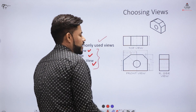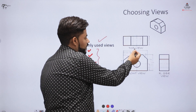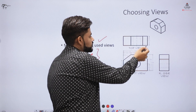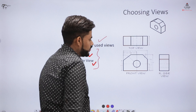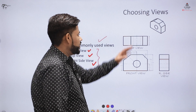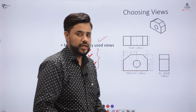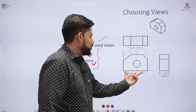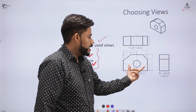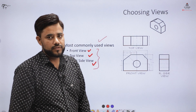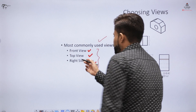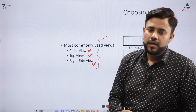For third angle projection, we keep the top view above the X-Y line and the front view below the X-Y line, with the right side view appearing on the right. But if I keep the object in the first quadrant — as followed in India — I need to keep the front view above, the top view exactly below it, and the right side view appears on the left. Generally we use three views, or additionally if the object is complex, we can use the left side view also.